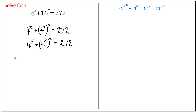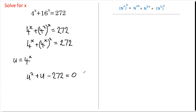Now, just so I don't have to keep writing 4 to the x, I'm going to let u equal 4 to the x. So we now have u squared plus u minus 272 equals 0. Let's see if we can factorize this — we need two numbers that multiply to 272 but have a difference of just one.